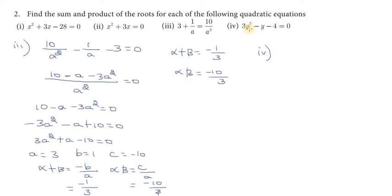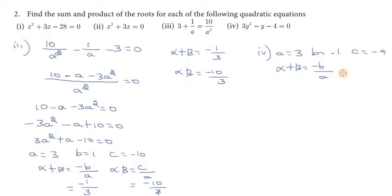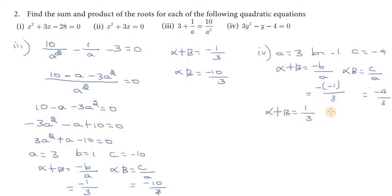Fourth substitution. The e value — a value — is 3, and b value is minus 1 and equals 2. You can find the sum: alpha plus beta is minus b by a, so minus minus 1 by 3, which gives plus 1 by 3. Alpha into beta is c by a, which is minus 4 by 3. So alpha plus beta is 1 by 3 and alpha into beta is minus 4 by 3.